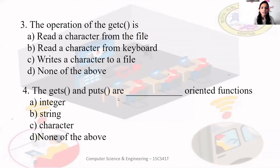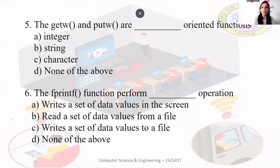gets and puts are string-oriented functions — answer is string. gets reads a string from a file, puts writes a string to a file. String means a group of characters; character means a single alphabet. getw and putw are integer-oriented functions. getw reads a single integer from a file.